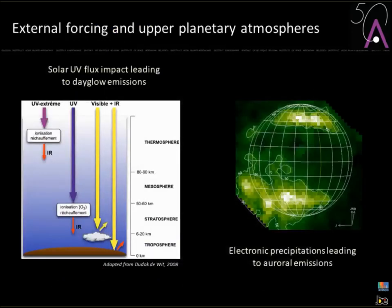Now I'm coming to the last part of the talk: the link between solar UV irradiance and the upper planetary atmosphere. Here is a cartoon showing the different parts of the solar spectrum relevant to any kind of planet — shown here for Earth. The extreme UV part is responsible for ionizing the ionosphere and some atmospheric heating; the UV part drives ionization especially of ozone; and the visible and infrared parts are more relevant for climate.